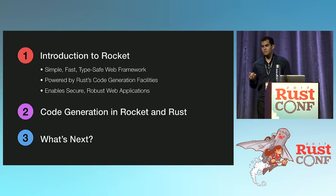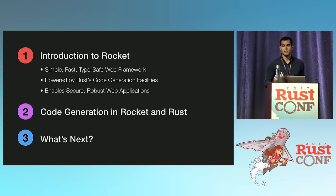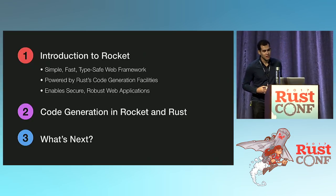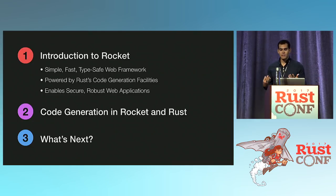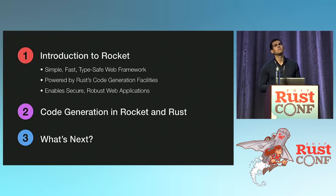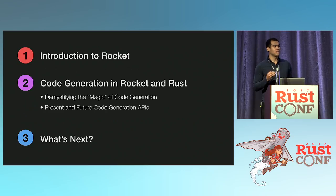Without Rust code generation, we wouldn't have Rocket. The idea is that Rocket lets you write secure and robust web applications in a way that nothing else really lets you do. The closest that other web frameworks get are those in languages like Haskell using something like Template Haskell. Then I want to talk about code generation.